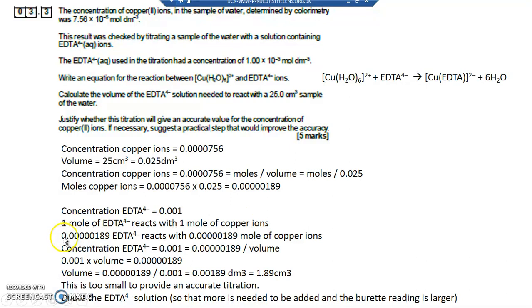So we've got 0.0000189 moles of EDTA. Concentration of EDTA equals 0.001. So the concentration equals number of moles 0.0000189 divided by the volume. We can take this value here and divide by 0.001. So 0.0000189 divided by 0.001 equals 0.00189 decimeter cubed. And therefore you can multiply by a thousand to gain centimeter cubed. So to go from a large unit value down into a smaller one you multiply by a thousand.